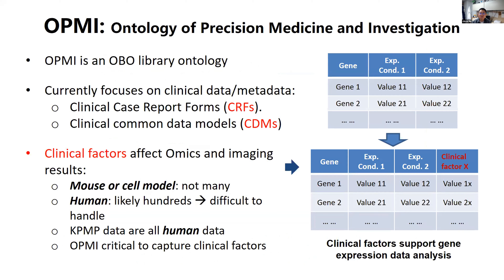Now moving to OPMI — the Ontology of Precision Medicine and Investigations. It's already an OBO library ontology. At the current stage, we focus on clinical data, especially data coming from clinical case report forms and clinical common data models (CDMs). We focus on clinical data because in human studies, unlike mouse or cell lines, you have hundreds of clinical factors that can each affect your OMICS or imaging data analysis results.